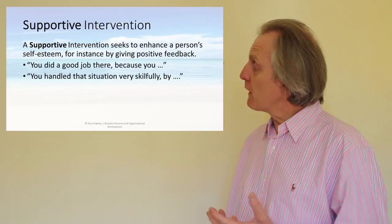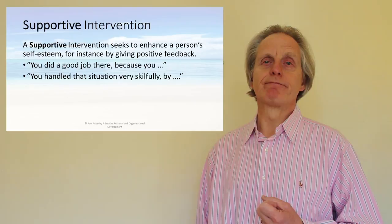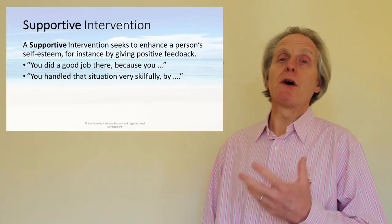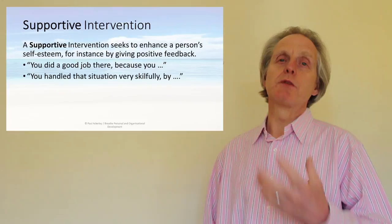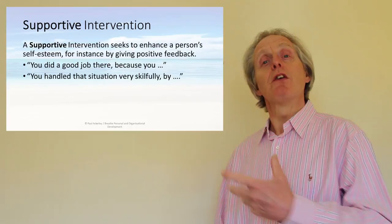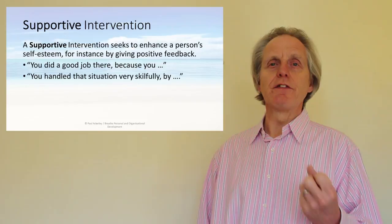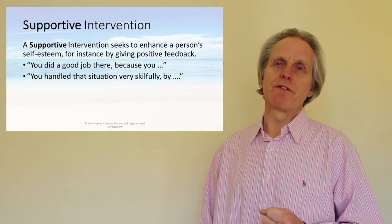The sixth and final intervention in John Heron's model is supportive. We've talked about confronting people about unhelpful behavior or attitudes, but we also need to compliment people and tell them when they've done well — to reinforce good behavior. For example: 'You did a really good job there because...' and give them the evidence, or 'You handled that situation really skillfully by...' and again give evidence. This enhances the person's self-esteem and hopefully ensures they do more of that in the future.